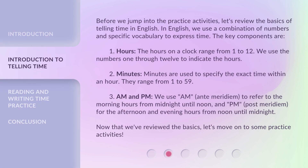Before we jump into the practice activities, let's review the basics of telling time in English. In English, we use a combination of numbers and specific vocabulary to express time. The key components are: 1. Hours. The hours on a clock range from 1 to 12. We use the numbers 1 through 12 to indicate the hours.